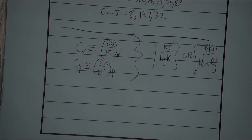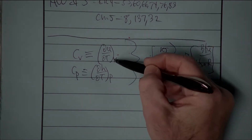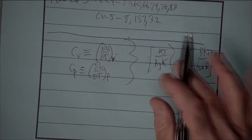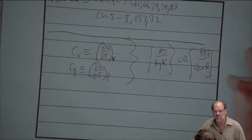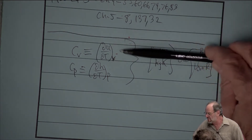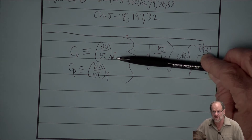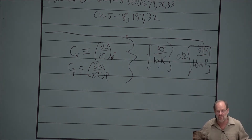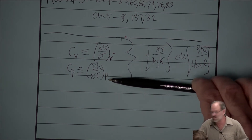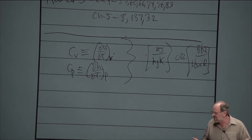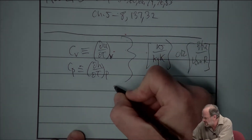The notation here is standard partial derivative notation — the subscript V or P just indicates what's held constant during differentiation; there's no multiplication. CV is called specific heat at constant volume because volume is held constant during the partial derivative — it has nothing to do with whether the process itself is constant volume. Same for CP. These properties can be used for any process. The two major applications are for ideal gases and for liquids.